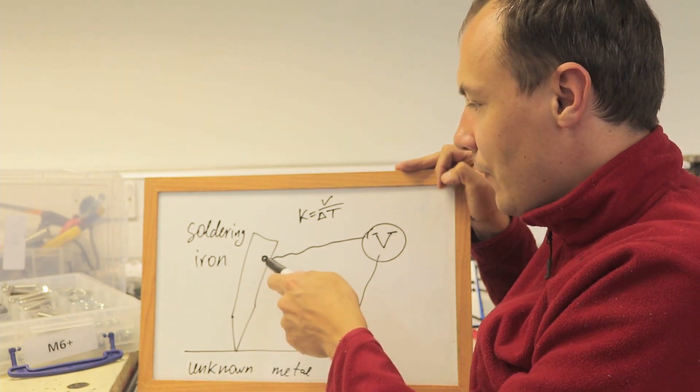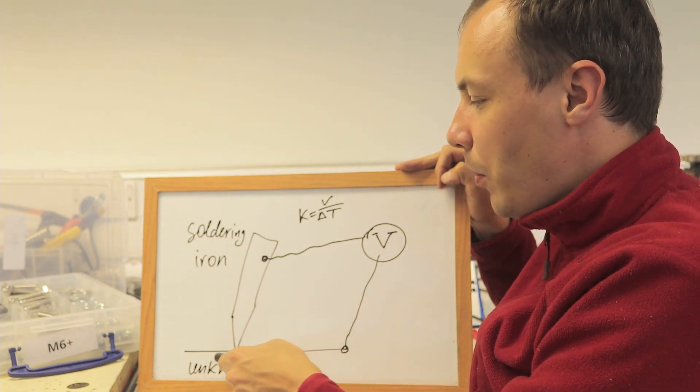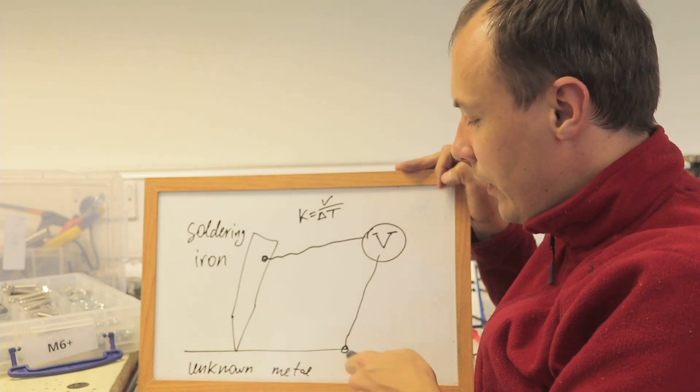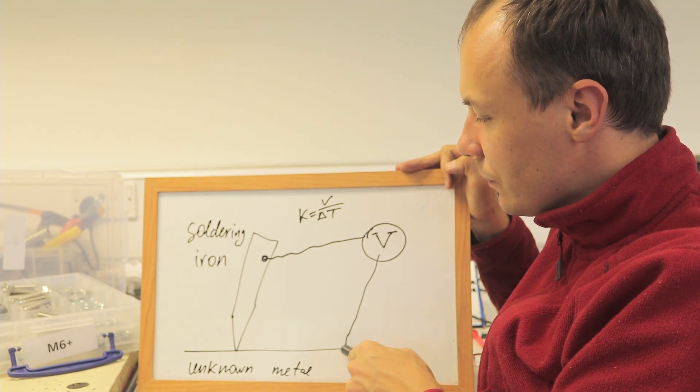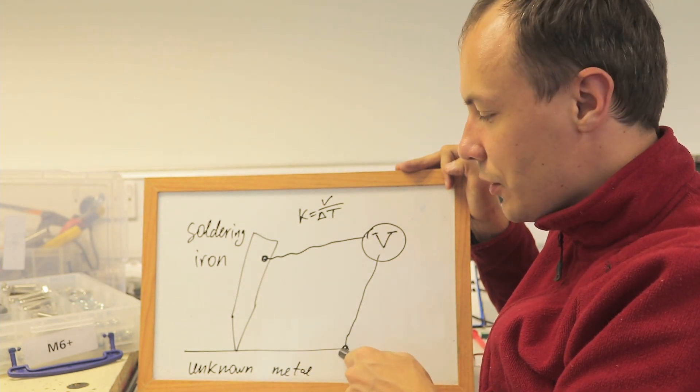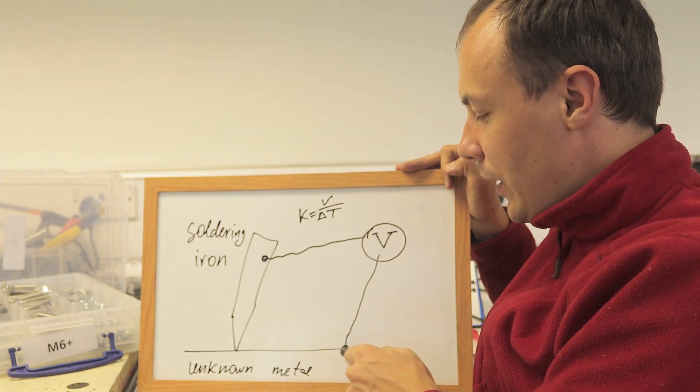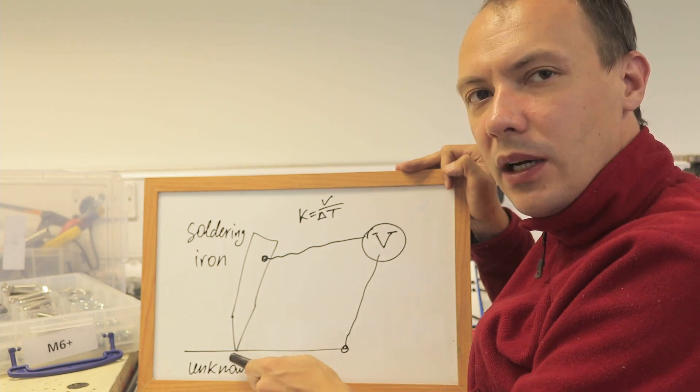We have the soldering iron, attach some copper clip to the iron, and we poke into the unknown metal. And we have another connector of the multimeter connected to the cold junction.